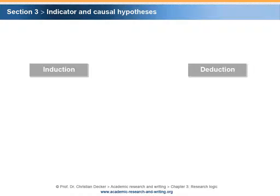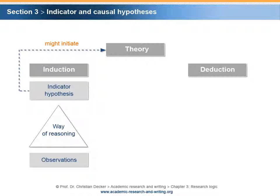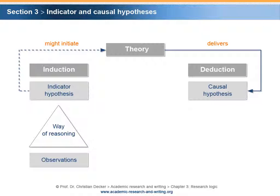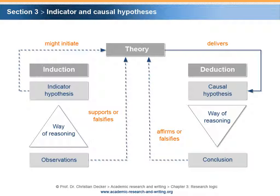Both induction and deduction have their shortcomings. This is why typically both methods are combined in the world of sciences. Often, an observation is the starting point for deriving an indicator hypothesis. An indicator hypothesis might initiate a theory. Typically, a theory delivers a causal hypothesis that can be used to derive a conclusion. Observations might be used to support or falsify a theory, and conclusions might affirm or falsify a theory.